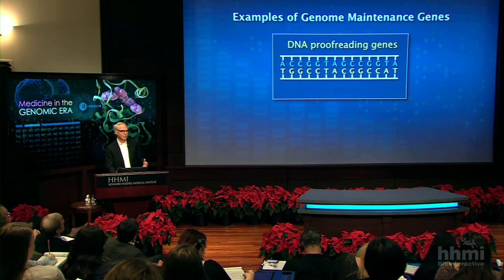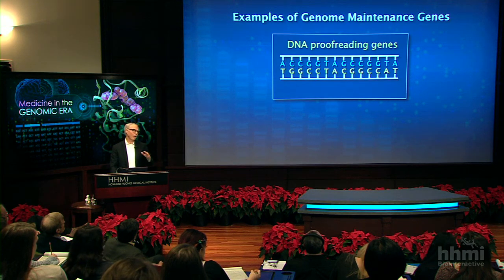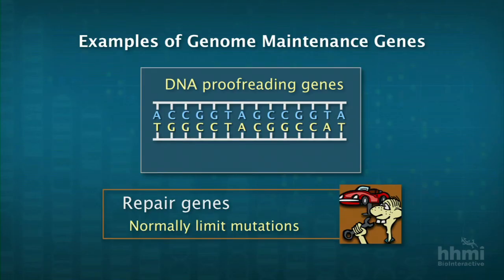Imagine what would happen if you had a mutation in the proofreading enzyme itself — suddenly you would accumulate mutations at an extremely rapid rate. That's exactly what happens in patients with 1,000 or more mutations per tumor, a form of colon cancer. It's not all colon cancers, but that's where this was first discovered. Repair genes are important in limiting mutations, and loss-of-function recessive mutations in those repair genes lead to this phenotype.